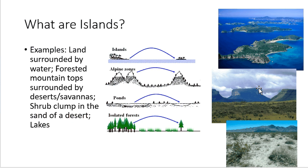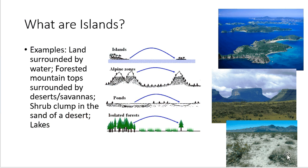The habitats on top of the Tepuis are influenced much more by clouds, mists, and lower temperatures, and they tend to have a lot more rain. We can also think of ponds surrounded by land or lakes as islands — islands of water isolated by a matrix of land. We can also think of small clumps of forest as islands separated by grassland. Even shrubs forming clumps surrounded by largely bare sand can be thought of as very small-scale islands in a sea of sand.